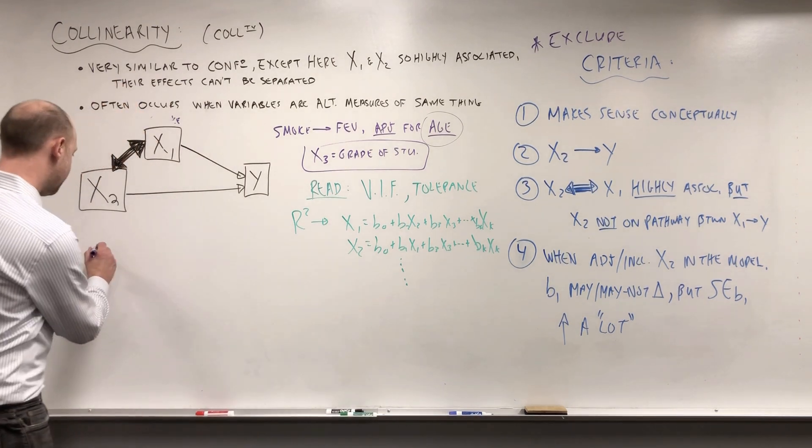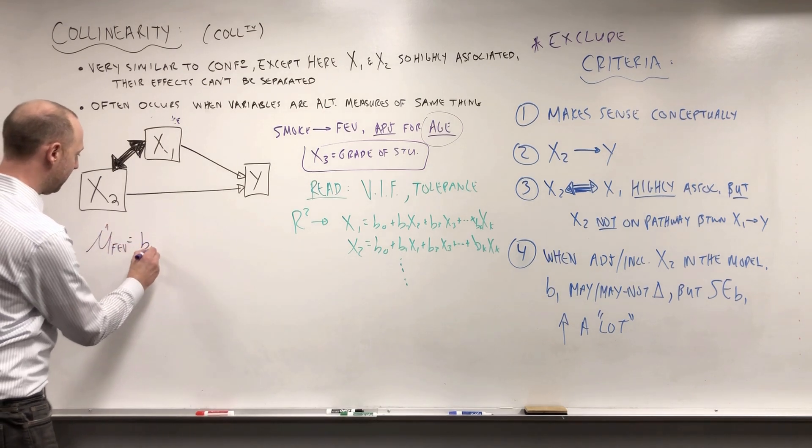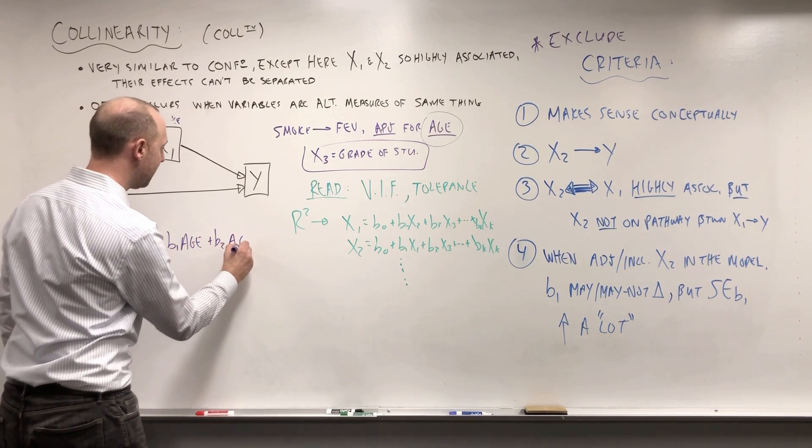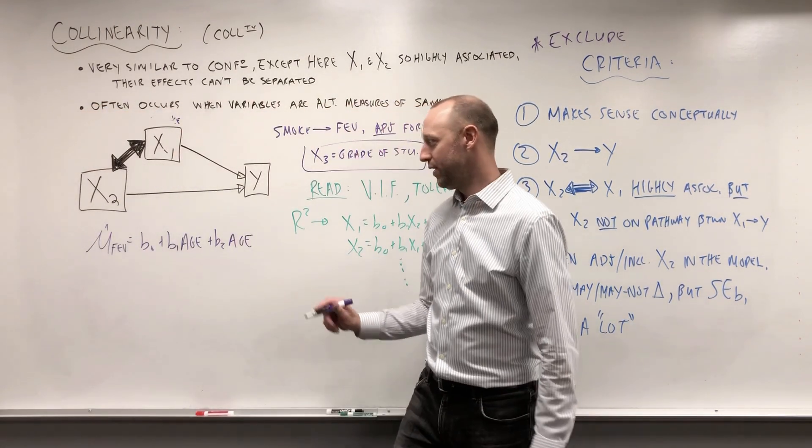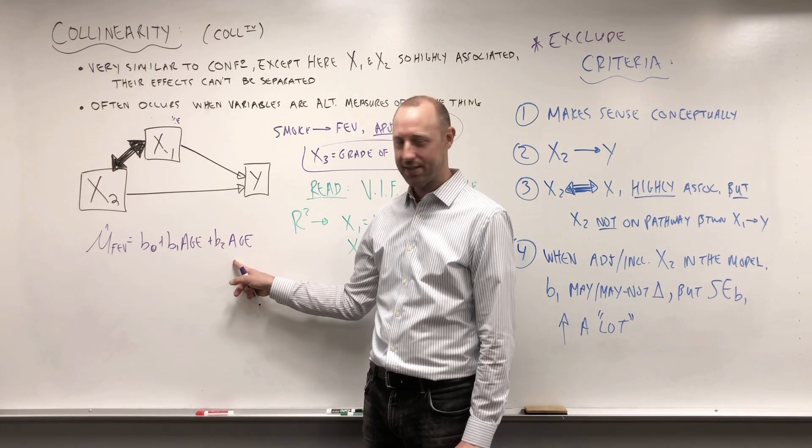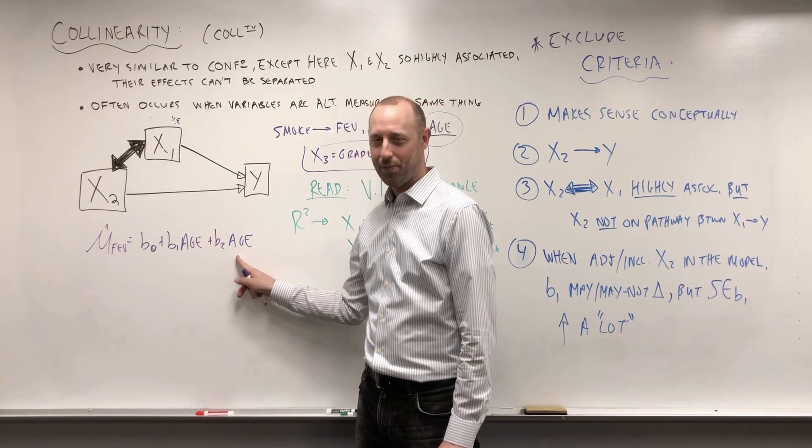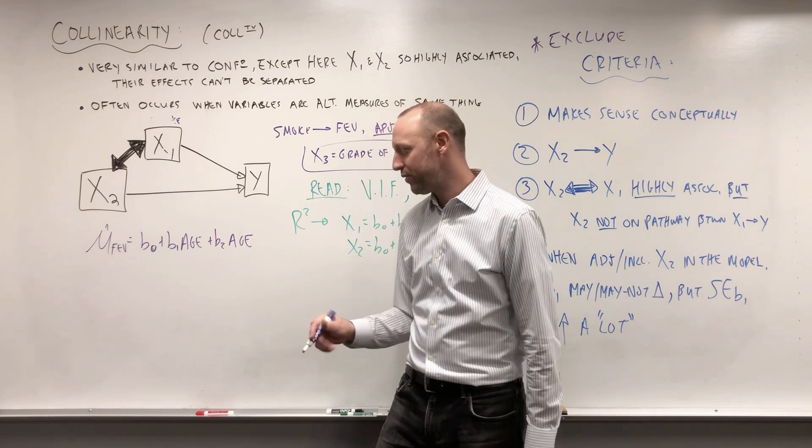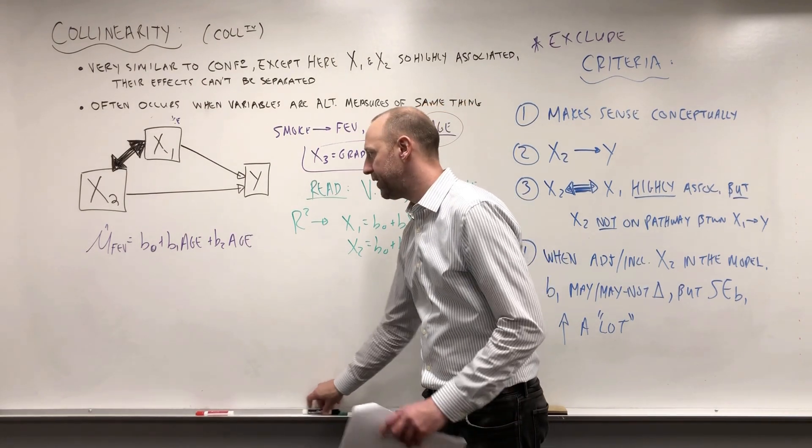It's exaggerated, it's not realistic, but to make the point. Suppose that we're going to try and estimate the mean FEV, the lung capacity, using age and age. So that's why I'm saying this is a ridiculous example. First, in practice you would never do this—you wouldn't put the same variable in a model twice. And in reality, if you try to, you'd actually get an error. The math would fall apart and no software will fit a model that has the same variable in there twice.